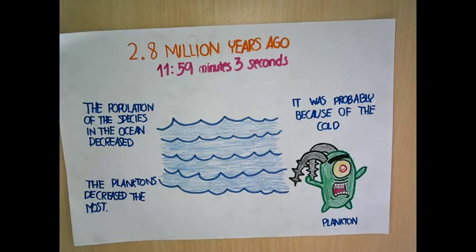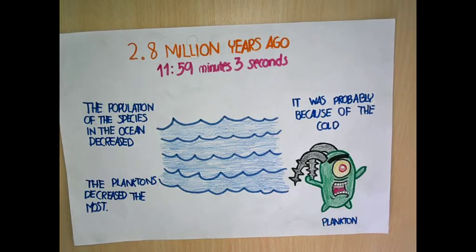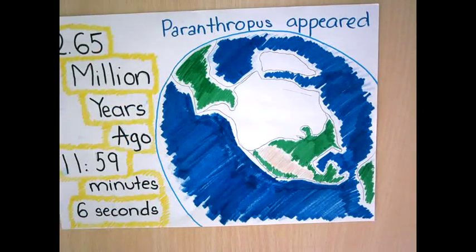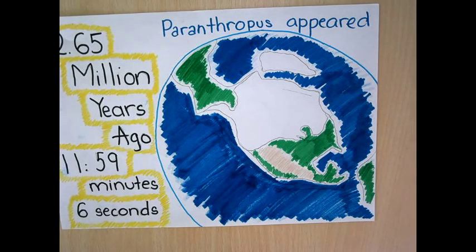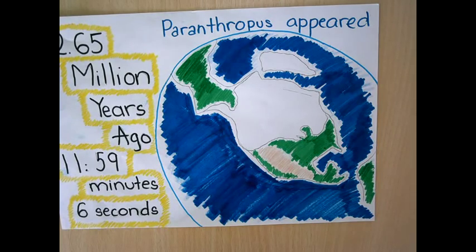2.8 million years ago, the population of species in the ocean decreased, probably because of the cold. The plankton population decreased the most. 2.65 million years ago, Earth's orbit changed so less solar energy hit the surface. Ice covered large parts of North America, Europe, and Asia, and flipped the state for glaciation in the northern hemisphere.